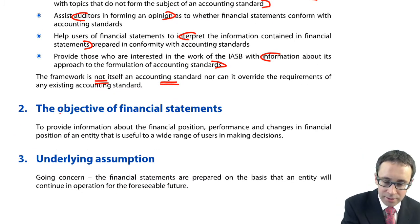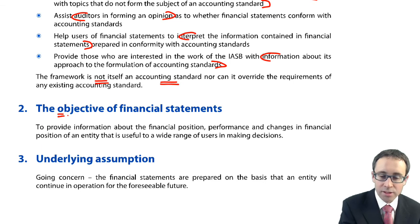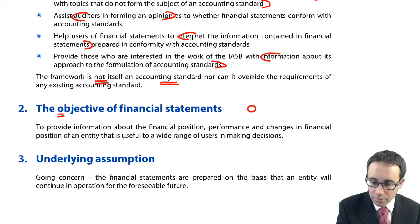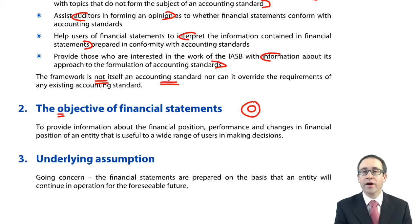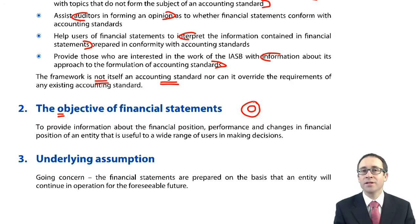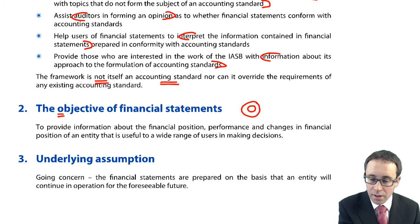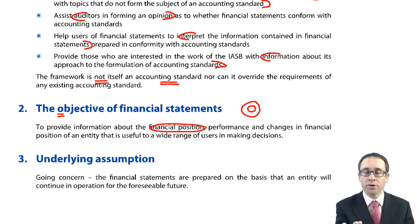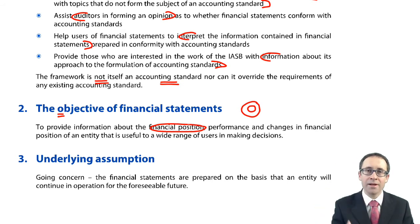Next on the list is O for the objective of your financial statements. The objective is that your financial statements should show information about the financial position — shown in your statement of financial position — so the assets, the liabilities and equity.